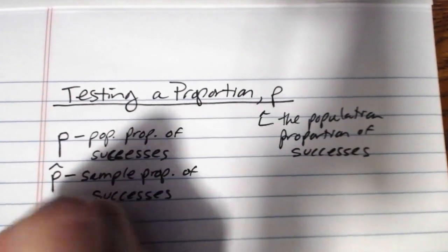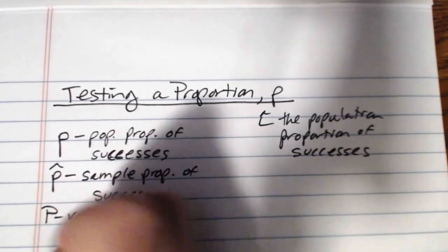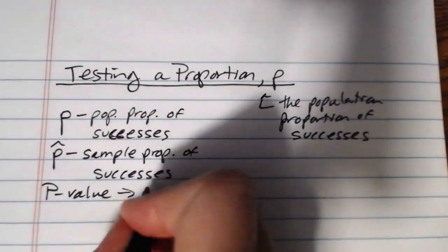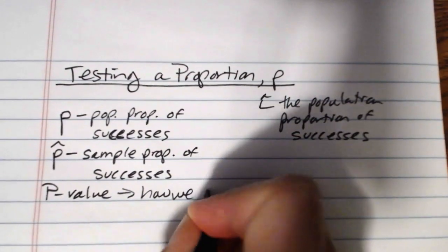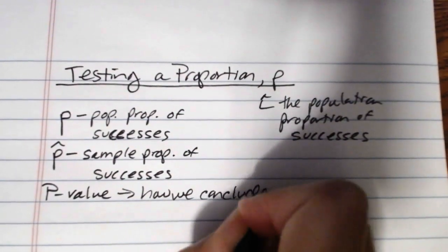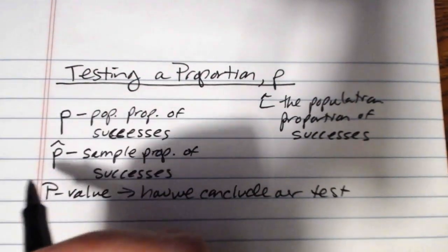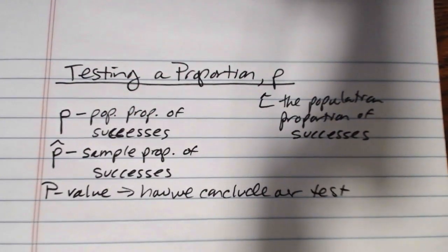And you will also have the p value, which is the capital P, and that's the thing that helps us conclude our test. It's really vitally important that you're using the appropriate symbol to label the appropriate thing. Otherwise you have three different things running around in the same problem called p, and if you can't keep them straight that's going to cause a lot of computational issues for you.